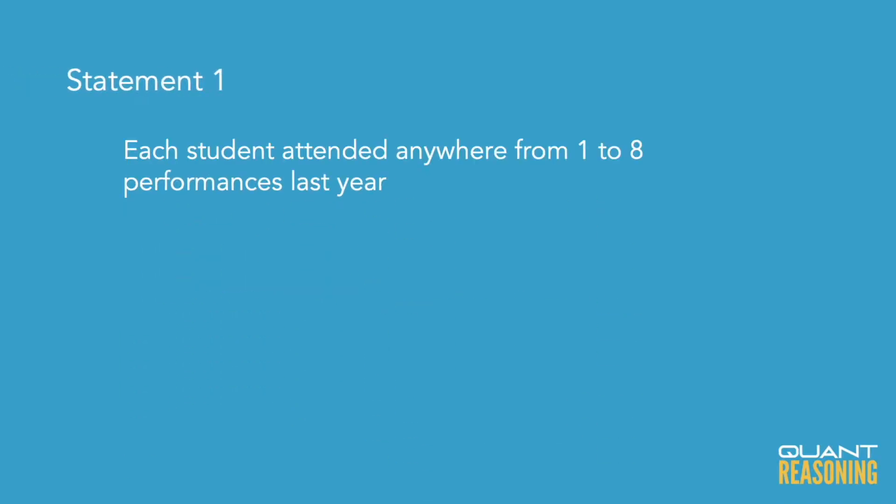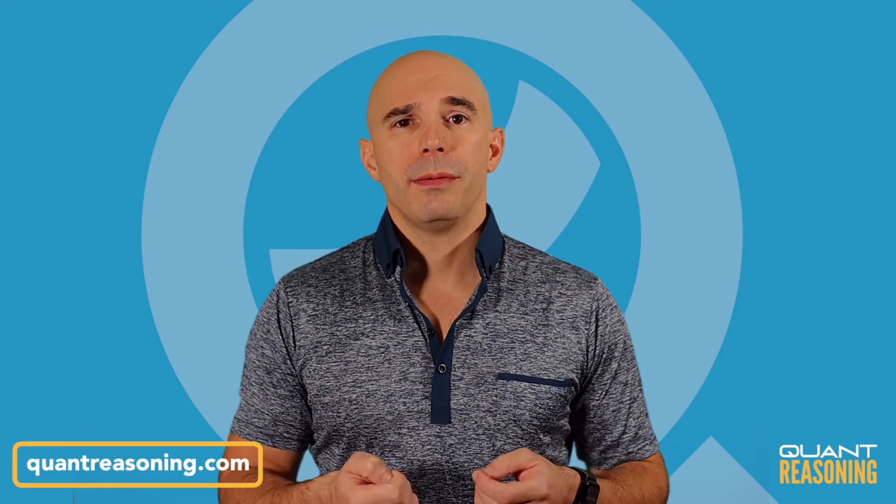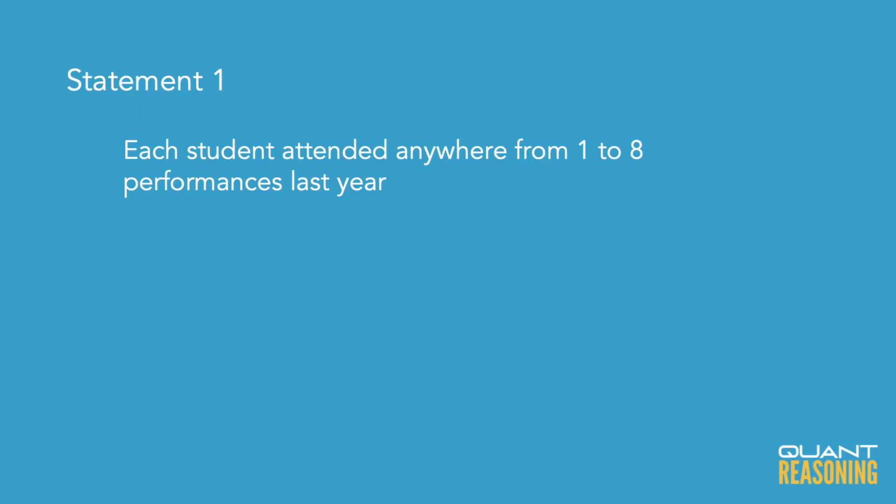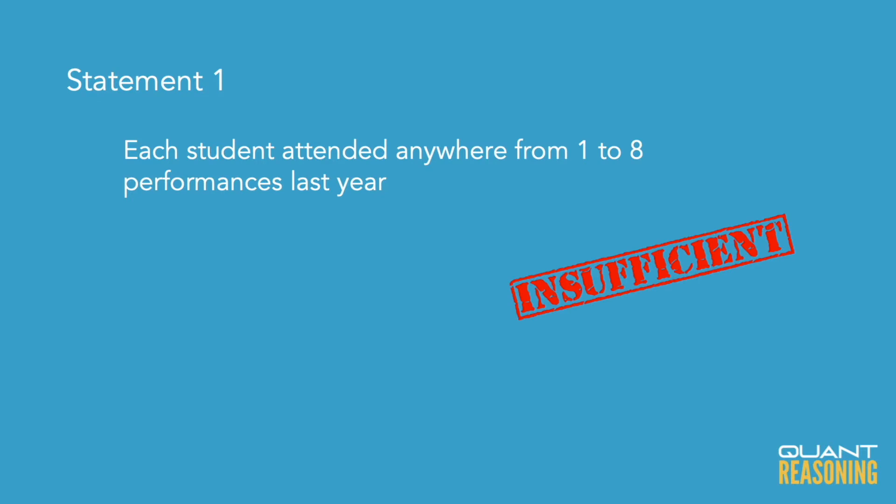Statement 1 tells us that every student attended at least one cultural performance. That takes care of part of our bad assumption — we now know all students did attend at least one. But that still leaves a lot unknown. Students could have attended exactly one performance, two performances, or all the way up to eight. On its own, Statement 1 is not sufficient to figure out the average number of students at each cultural performance.